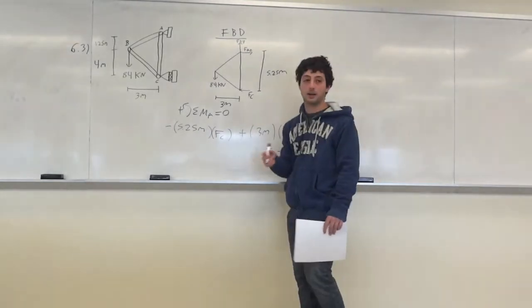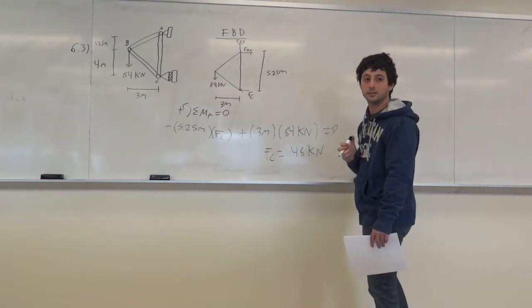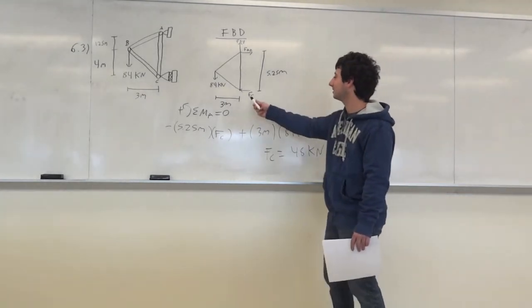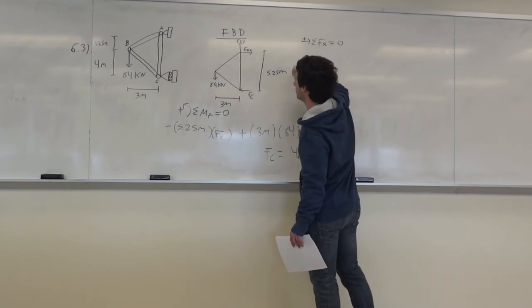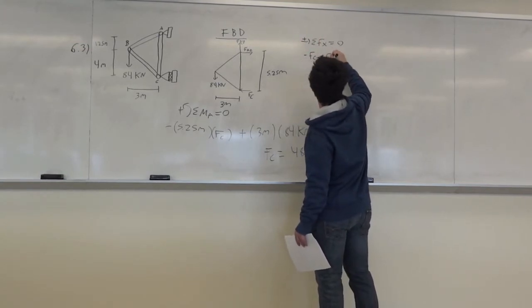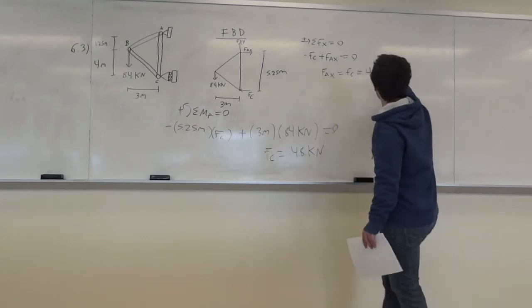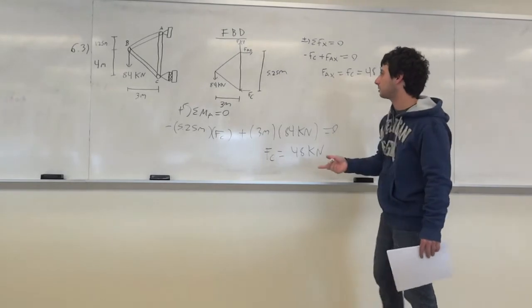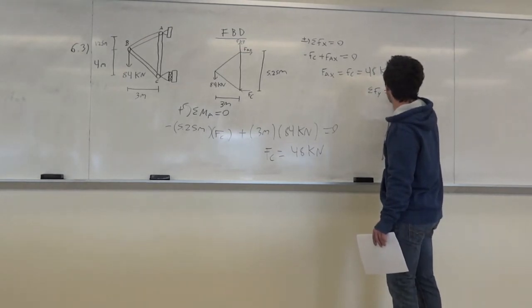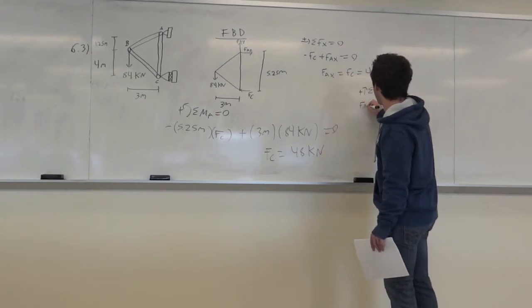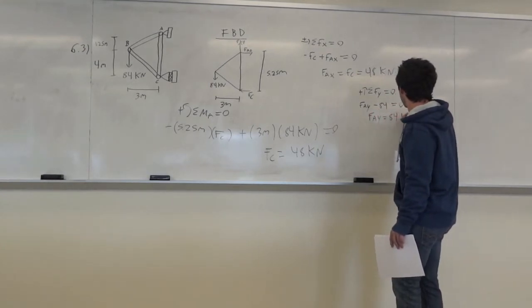Now that we have F_C, we sum the forces in the X direction to be zero, taking right as positive: −F_C + F_AX = 0, so F_AX = F_C = 48 kilonewtons. Then summing forces in the Y direction: F_AY − 84 = 0, so F_AY = 84 kilonewtons. We now have all the reactions.